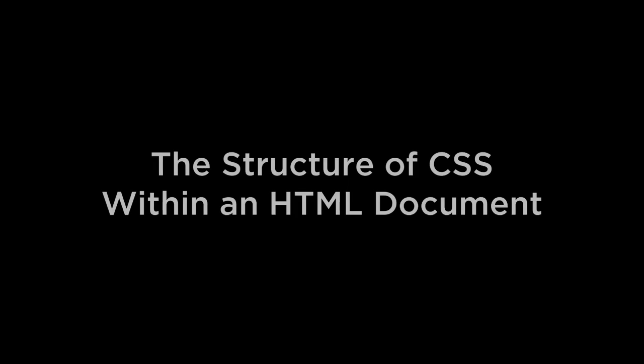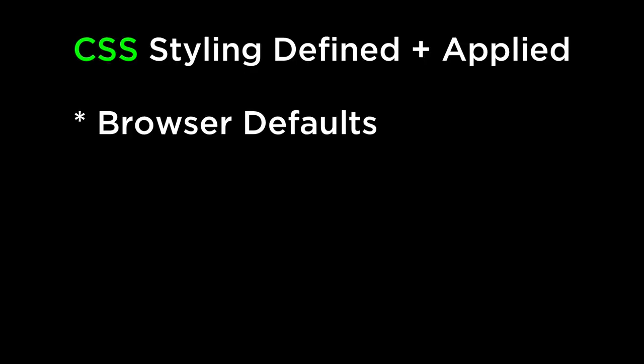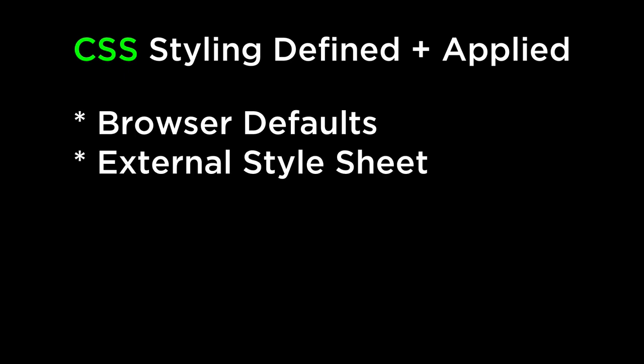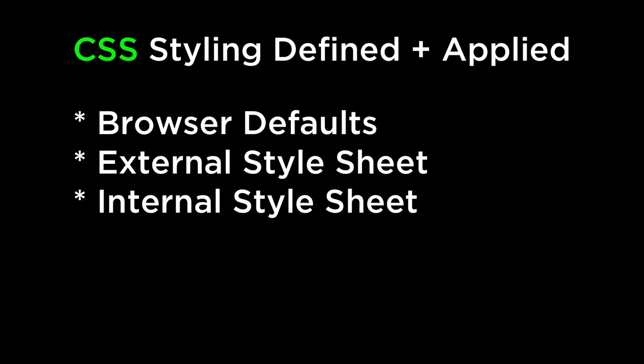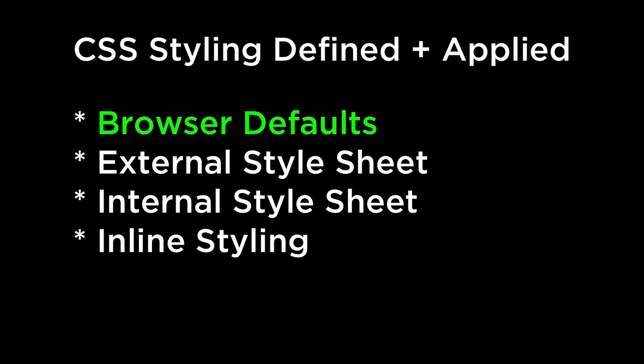The structure of CSS within an HTML document. CSS styling can be applied by the browser defaults, an external style sheet, an internal style sheet, and or inline styling. Browser defaults are the most basic defaults as they are the defaults your browser uses on every web page you view. External style sheets are the style sheets that are referenced by a link within the head portion of the HTML document.